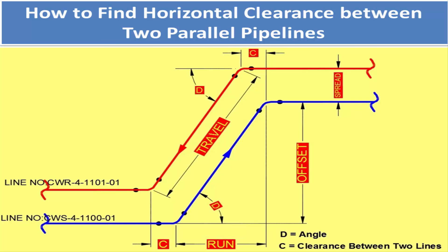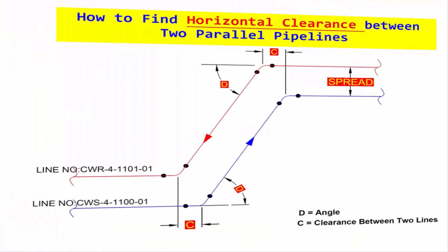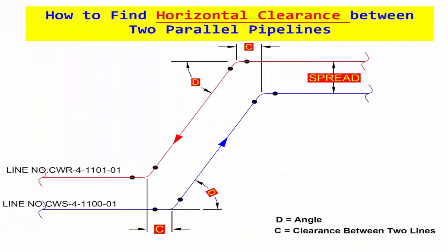In this drawing, 4-inch CWS cooling water supply line and CWR cooling water return line, two pipelines going parallelly with the same distance between two lines. Vertical distance, it means elevation difference, is called spread. D is called elbow degree, and C called horizontal distance between line one elbow center to line two elbow center.